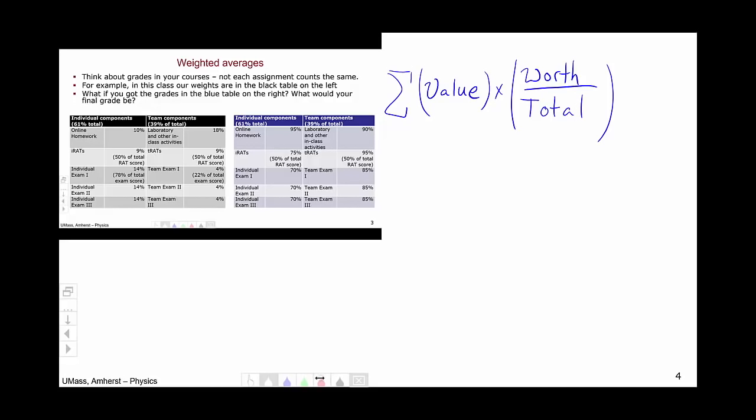Let's work this through for this particular example. So in this particular example, this hypothetical student achieved a 95, so that would be the value on the online homework. And the online homework is worth 10 out of a total of 100. So I've done the value of 95. It's worth 10 out of a total of 100. And now I just repeat this for all the different categories.